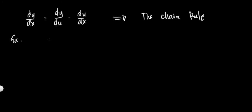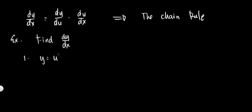Example. Find dy over dx using the chain rule. Number one: y equals u squared plus u, and u is equal to 2x plus 1.